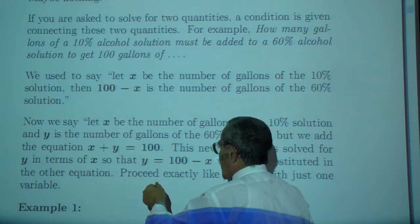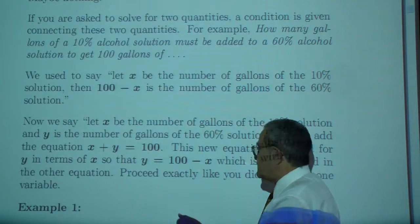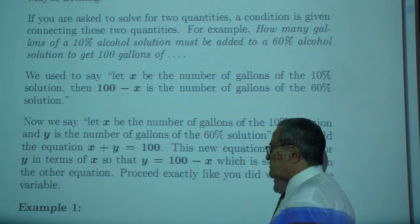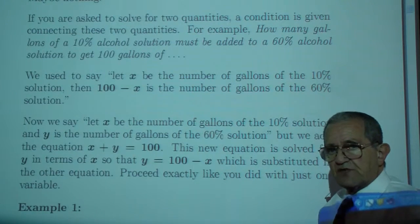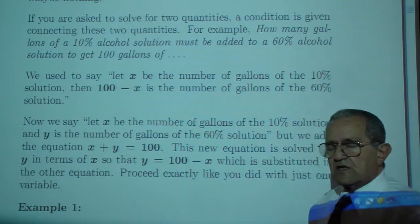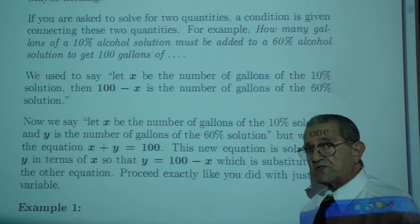So if you were to solve this for y, you would say like you did before, y is 100 minus x and continue. Except that now instead of having one equation in one unknown, we have two equations in two unknowns.